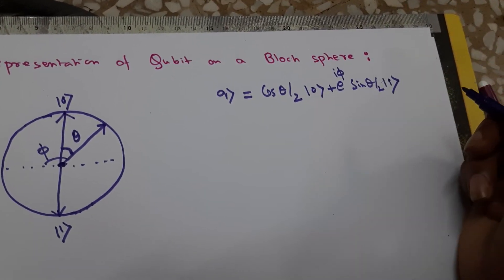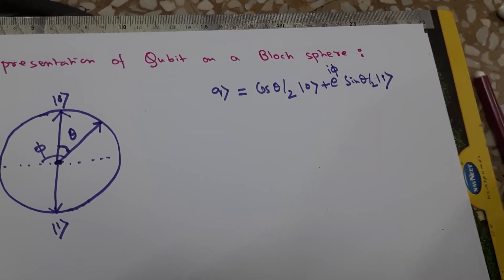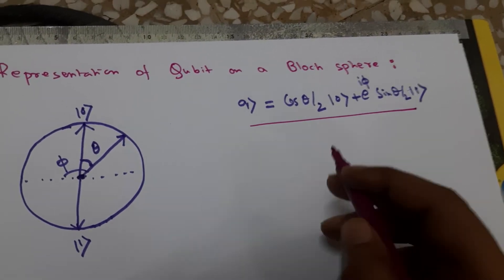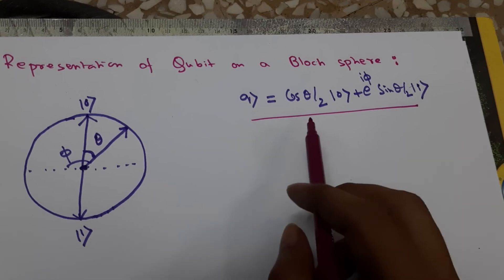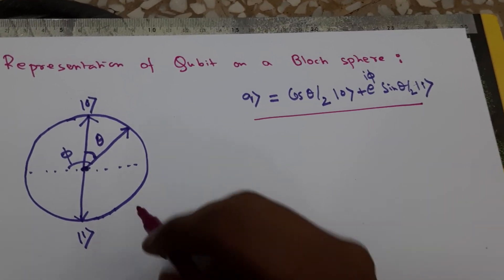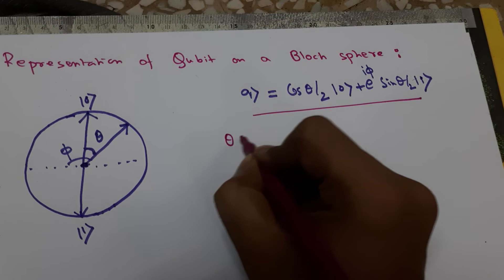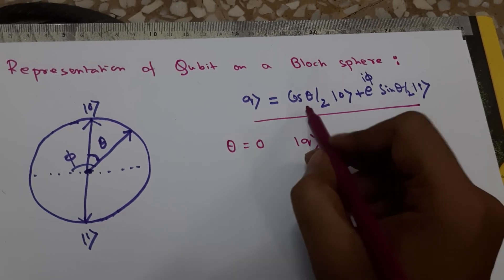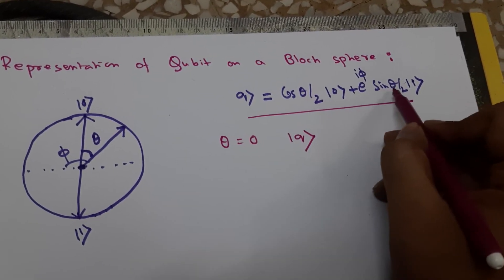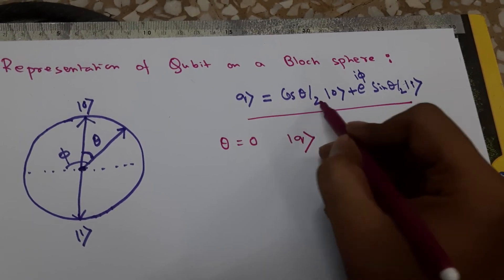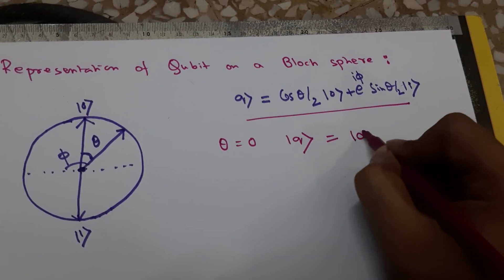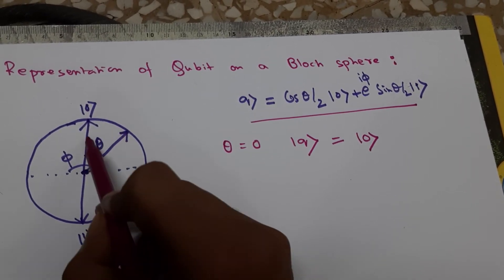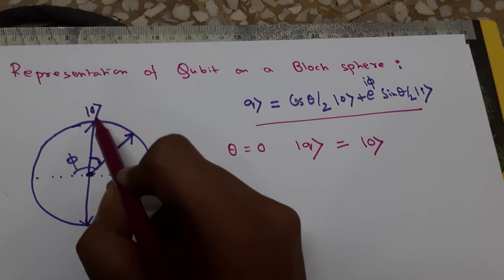This is a general representation of a qubit. We can easily see why this is true. Let's suppose theta is 0. Then this qubit becomes cos(0) and sine(0) is 0, so only this term survives and the qubit becomes |0⟩.